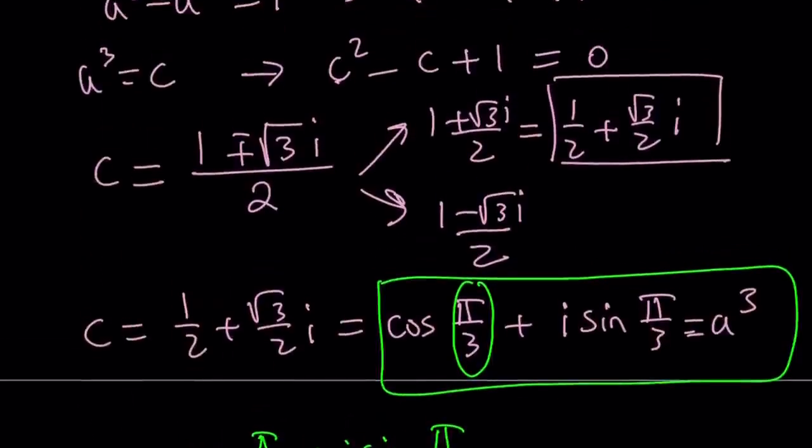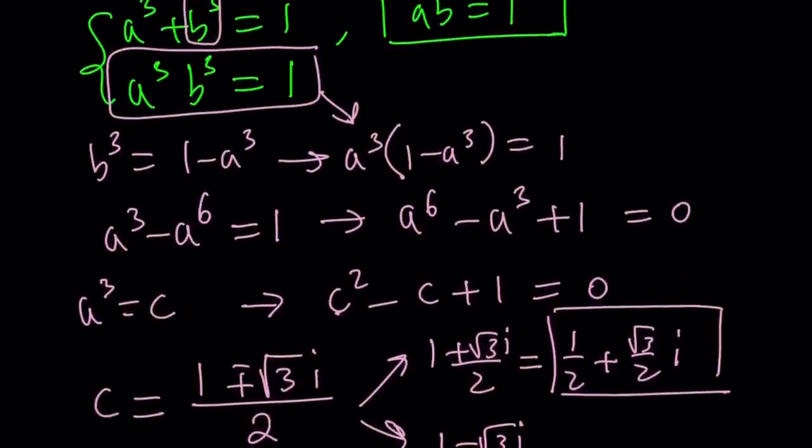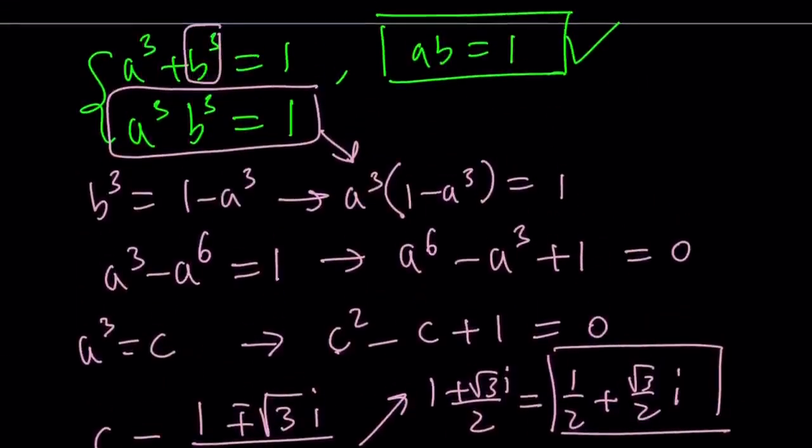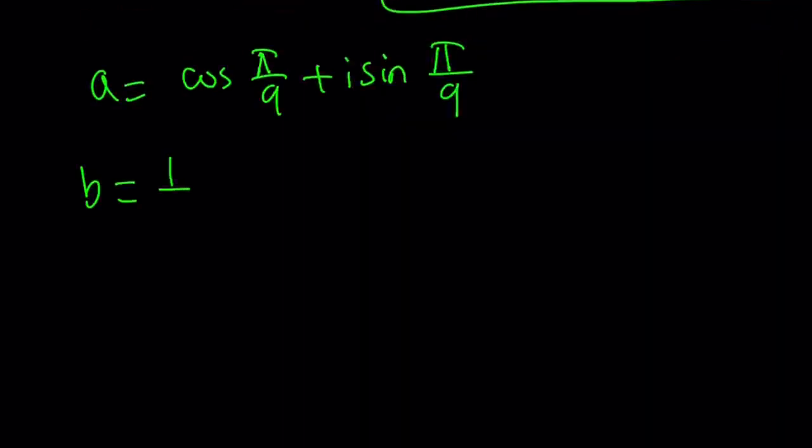And b, what is b? b is easy to find because ab is 1. Look at that. So b is 1 over a. But how do you find the reciprocal of a complex number? Easy. You just have to change the sign. It's like cos(π/9) - i·sin(π/9).